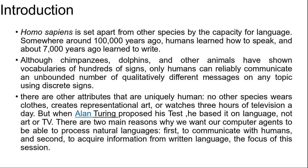Homo sapiens is set apart from other species by the capacity for language. Somewhere around 1 lakh years ago, humans learned how to speak, and about 7000 years ago learned to write. Although chimpanzees, dolphins and other animals have shown a vocabulary of hundreds of signs, only humans can reliably communicate an unbounded number of qualitatively referring messages on any topic using discrete signs. There are other attributes that are uniquely human.